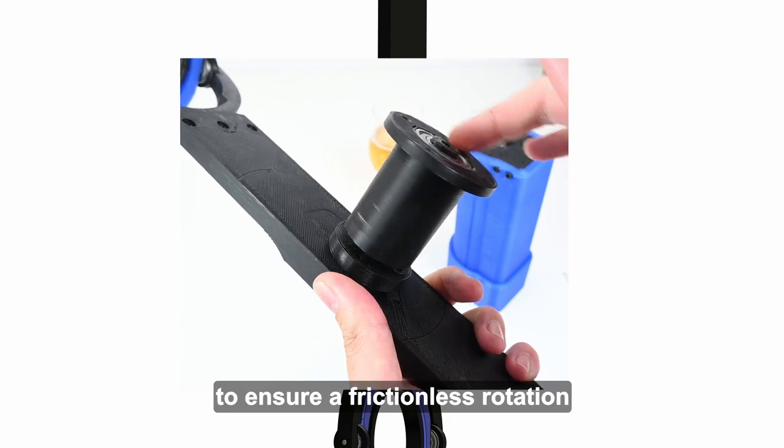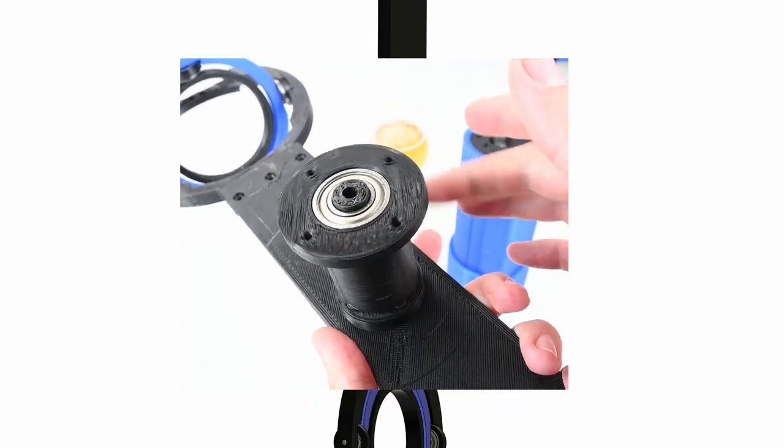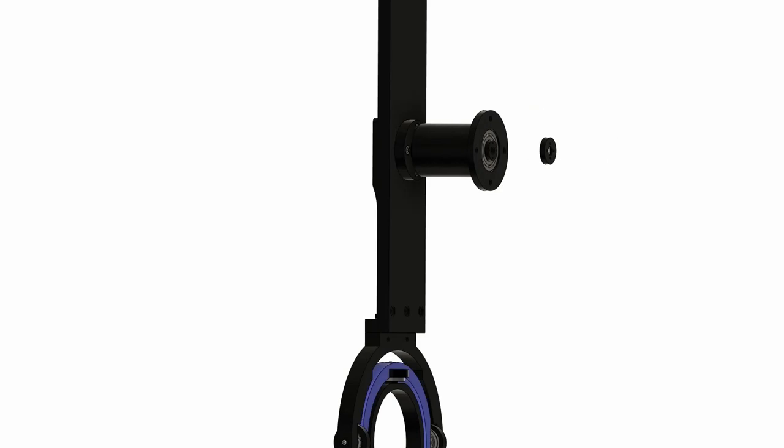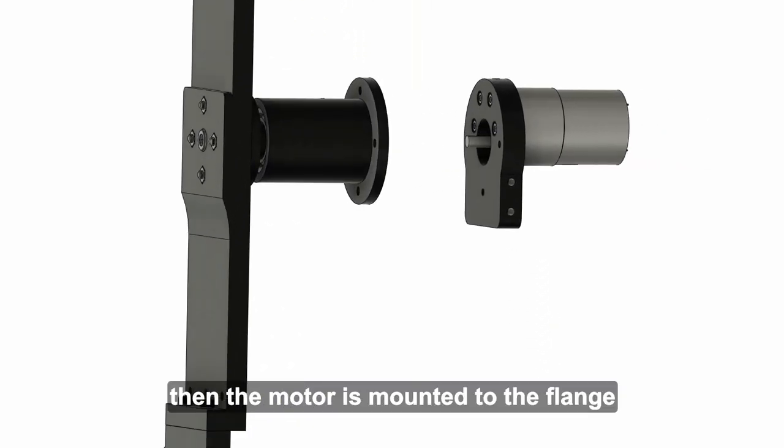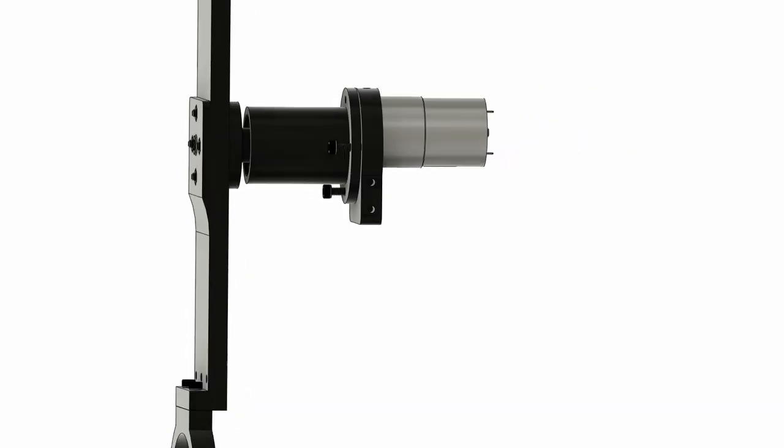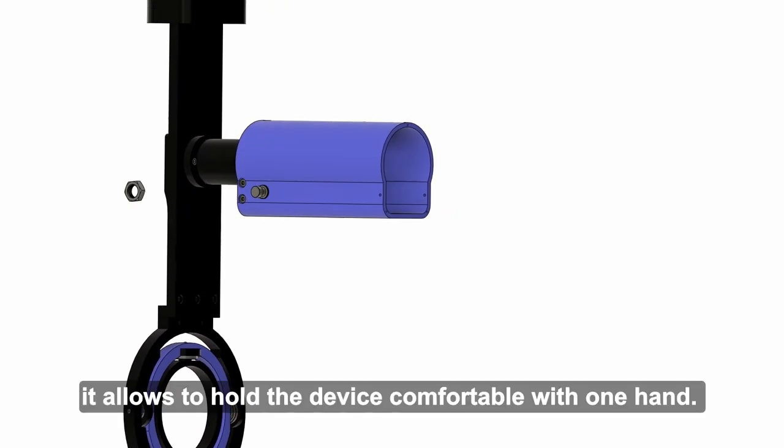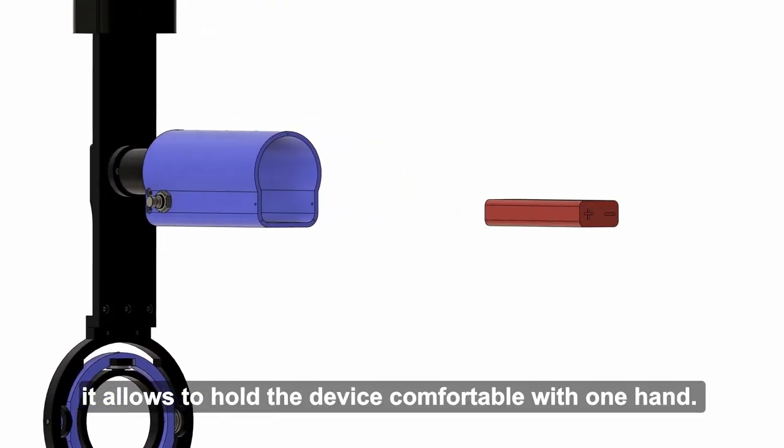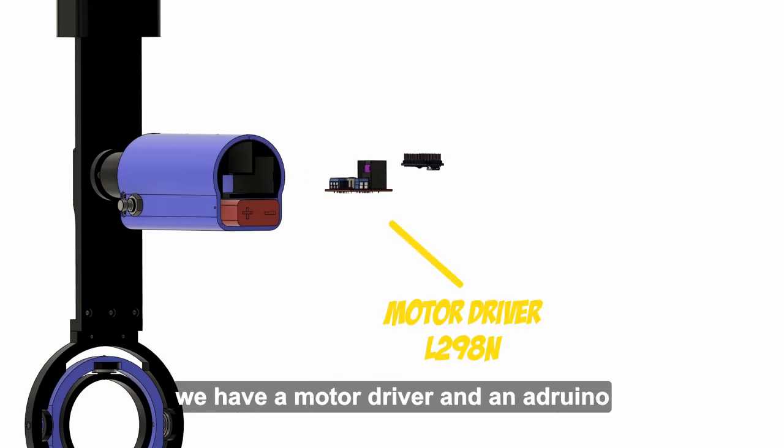Then the motor is mounted to the flange. We have this huge housing for the electronics. It allows to hold the device comfortably with one hand. For the electronics we have a motor driver and Arduino. The Arduino allows us to accelerate and decelerate the motor by pushing the start stop button.